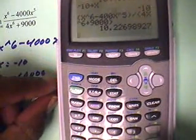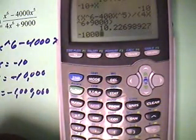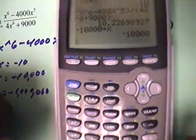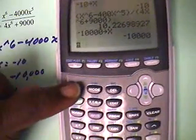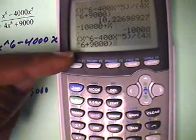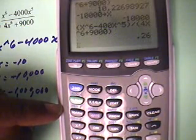Now, let's change x to negative 10,000, negative 1, 0, 0, 0, 0, store that into x. Okay, now we're going to bring the equation up again by going second function, and then second function enter. Okay, now the equation is back, we're going to hit enter, and I get 0.26.